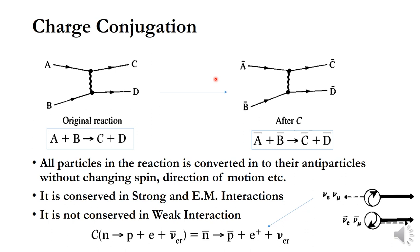If this reaction is not possible, the charge conjugation is not conserved in the reaction. It is observed that the charge conjugation is conserved in strong and electromagnetic interactions, but it is not conserved in weak interactions.